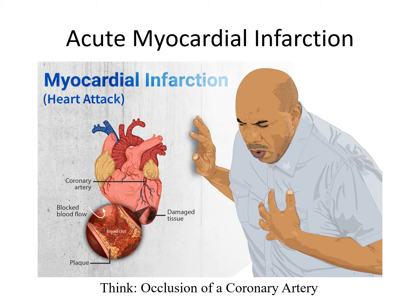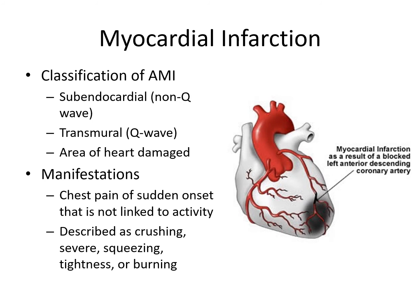Acute myocardial infarction is death of myocardial cells, and it is a life-threatening event. It occurs when blood flow to a portion of cardiac muscle is completely blocked, resulting in prolonged tissue ischemia and irreversible cell damage. Acute MIs can be classified as subendocardial (non-Q wave infarctions) or transmural (Q wave infarctions). When all layers of the myocardium are affected, it is known as a transmural infarction.